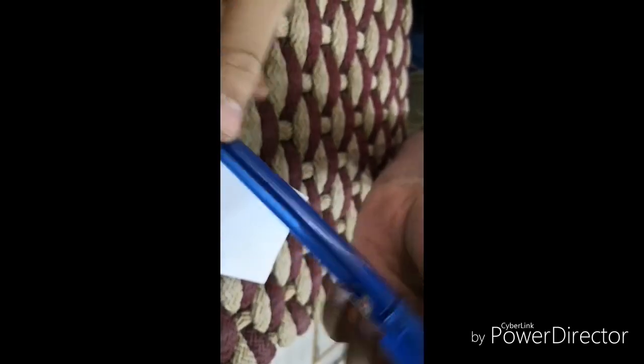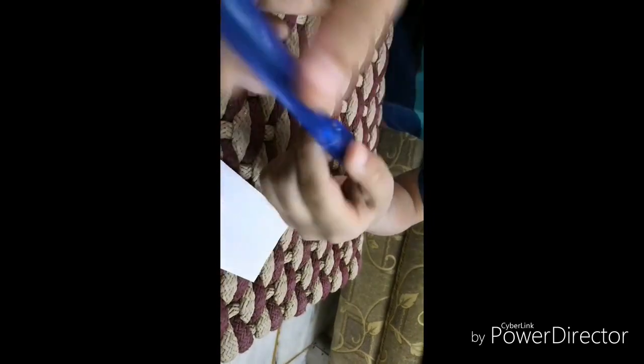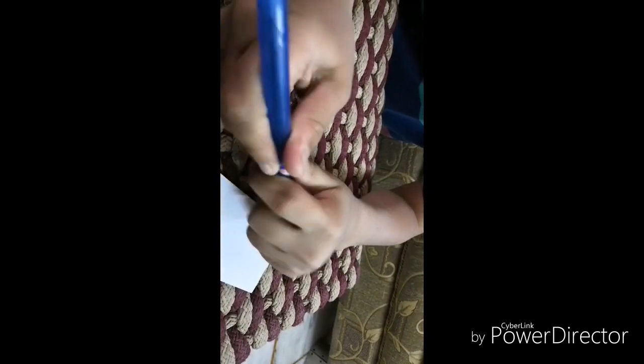Only this small sticker is given on the pen, otherwise nothing is given. It's just a translucent body, blue colored, normal body. So it should be a three rupee pen instead of being six. No grip is given here.